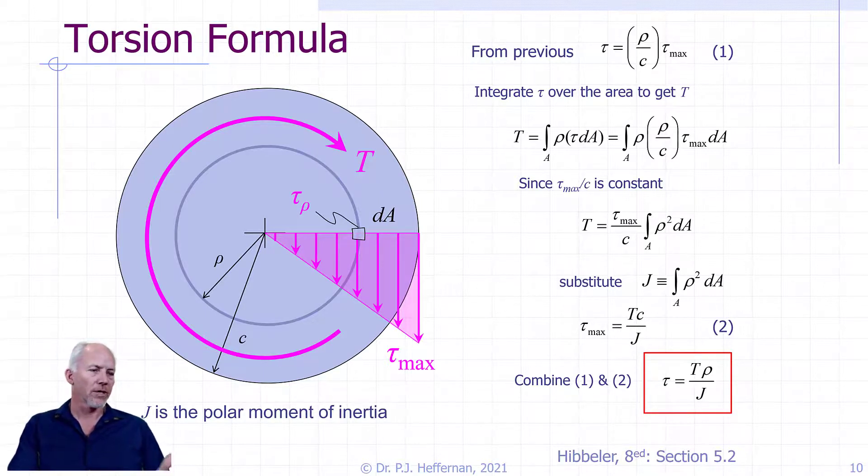So just to look at it a little bit, so we have our torque, internal torque applied, always internal torque taken from your torque force diagram, multiplied by your distance from the longitudinal axis, so your distance out, divided by the polar moment of inertia. If you're interested in the maximum, then you would just substitute in C for rho, and you would get Tc over J, and you would have tau max.